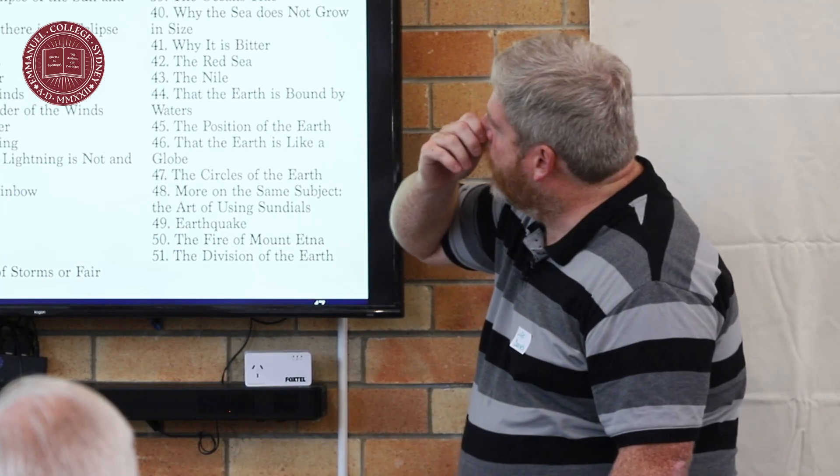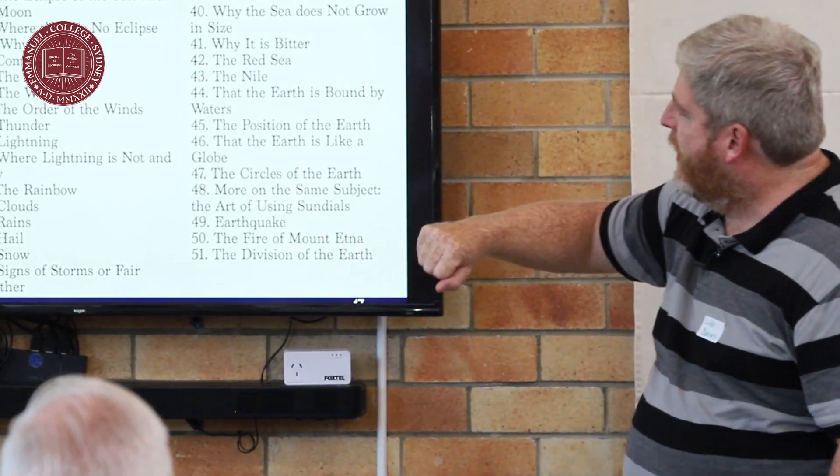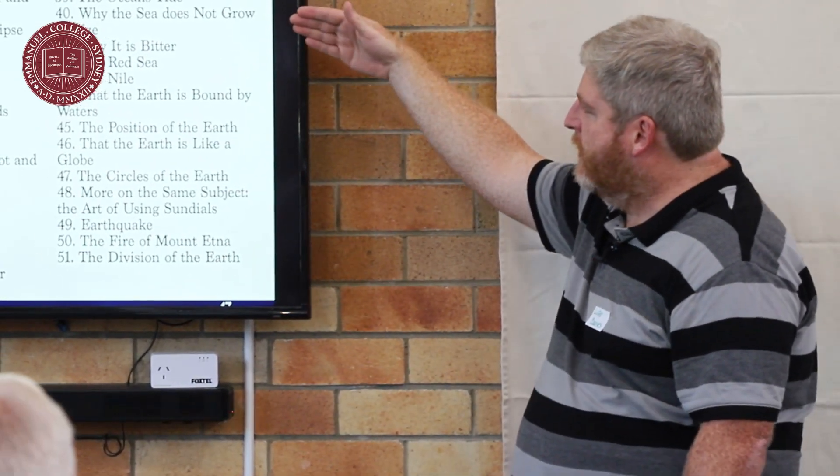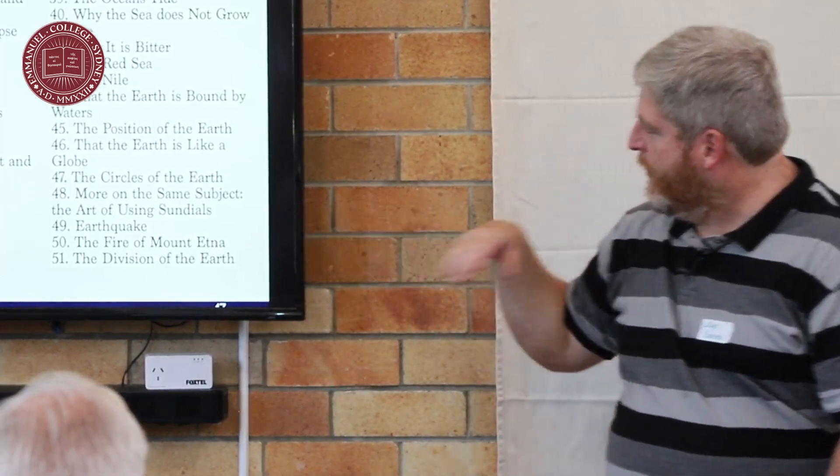He writes a book, a textbook for his students called On the Nature of Things. Fantastic title. You'd write anything in a book called On the Nature of Things. And here's the contents page. And it's literally just everything he can get his hands on about the natural world and write down. From the planets, astronomy, the Milky Way, eclipses, they're important, comets, thunder, lightning, down to weather, oceans, tide, why the sea is bitter, the circles of the earth, earthquakes. It's all there. Most of the education in the West is happening in these monastery schools.